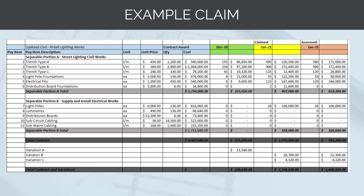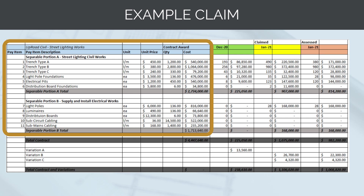Let's finish this section on payment by going through an example of a progress claim. This is an example payment claim from an imaginary street lighting subcontractor called Uproad Civil, who have been engaged to complete the civil and electrical works associated with a new street lighting system by us, the head contractor, on a road project. The payment claim is broken down into sections and comes from the original pricing schedule submitted with Uproad Civil's tender response. The contract has two separable portions: Separable Portion A — the street lighting civil works — and Separable Portion B — the supply and installation of the electrical works.